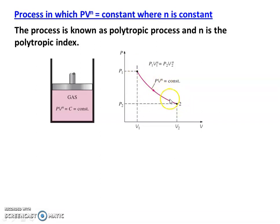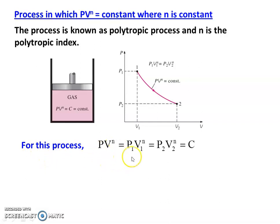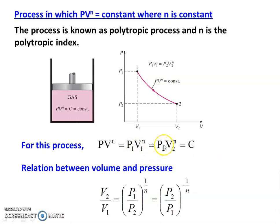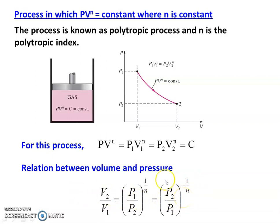Applying the equation PV^n for the initial state gives P1·V1^n, and for the final state P2·V2^n. So the polytropic process satisfies: PV^n = P1·V1^n = P2·V2^n = C (constant). From P1·V1^n = P2·V2^n, rearranging gives V2/V1 = (P1/P2)^(1/n), or equivalently V2/V1 = (P2/P1)^(−1/n). This is a very important conclusion in the polytropic process.